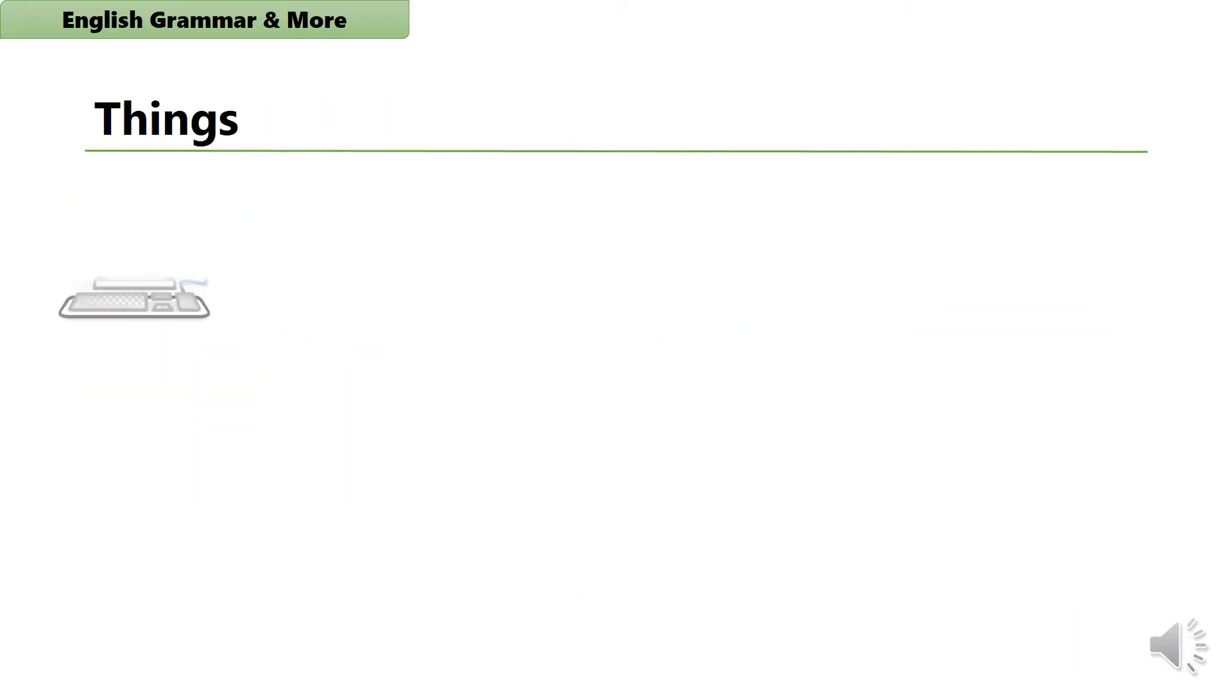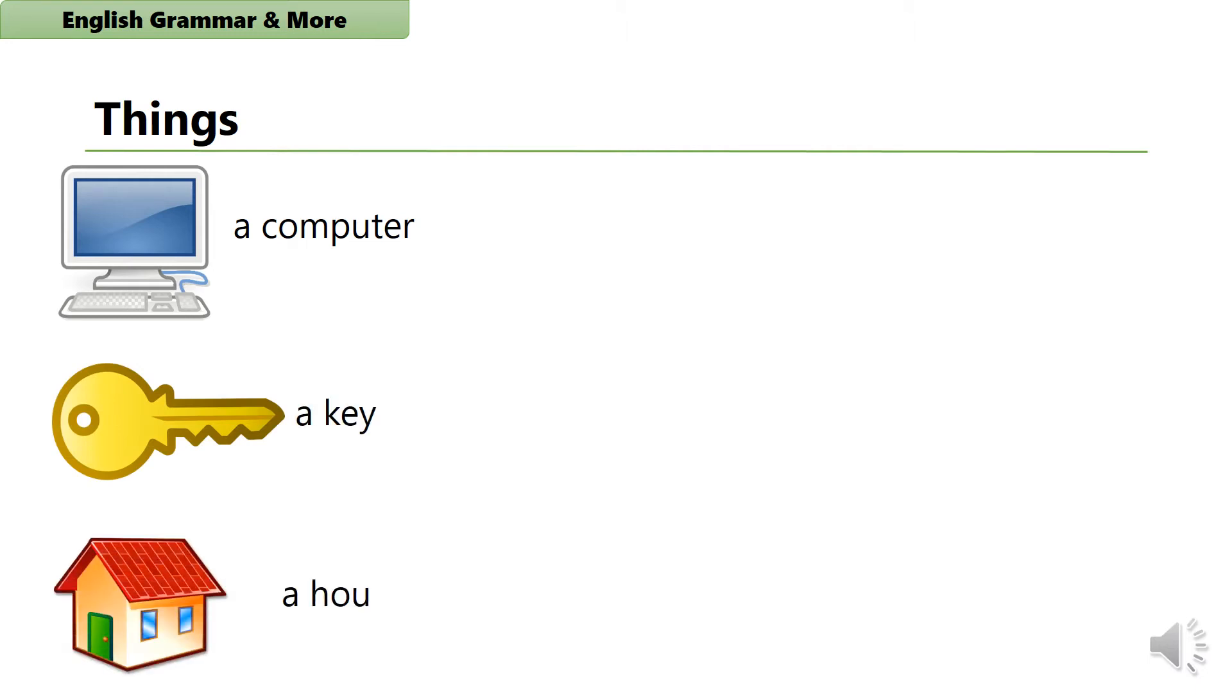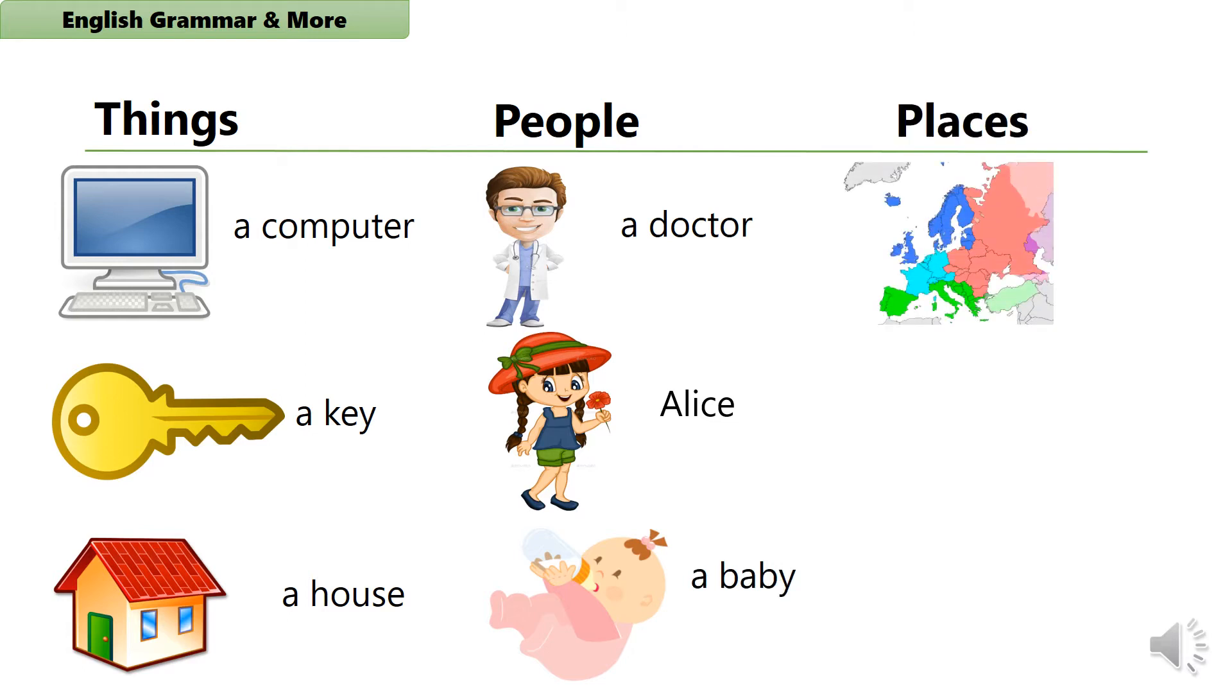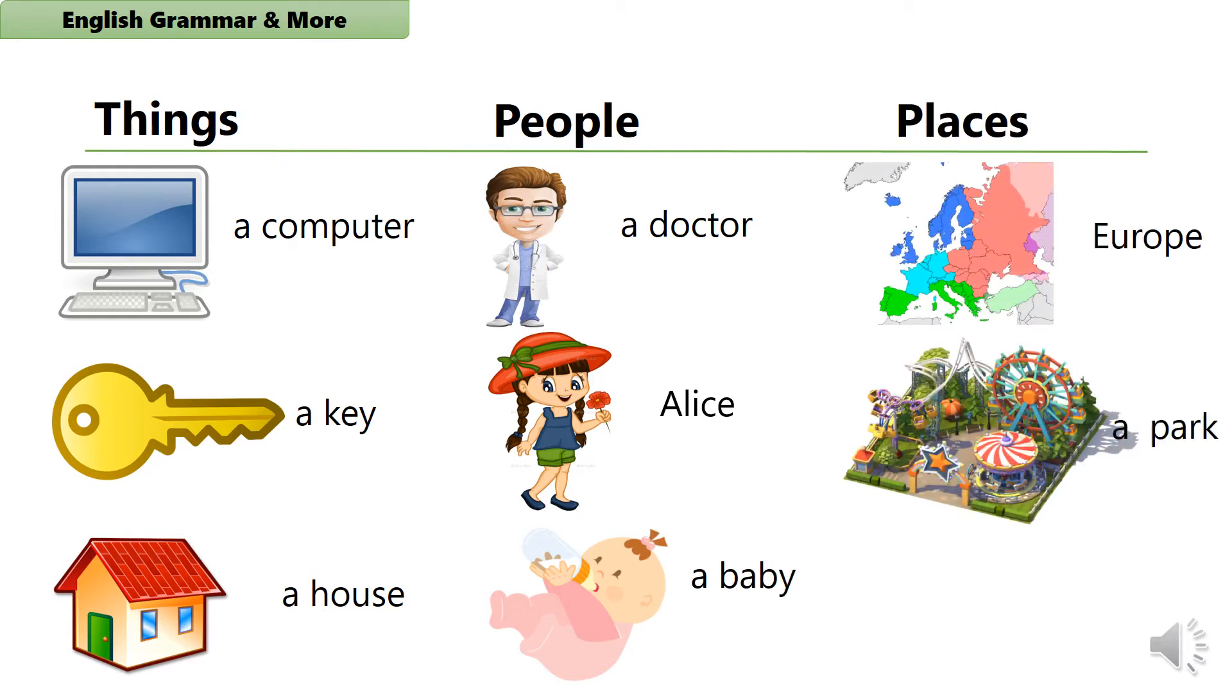For example, a computer, a key, a house, a doctor, Alice, a baby, Europe, a park, a city.